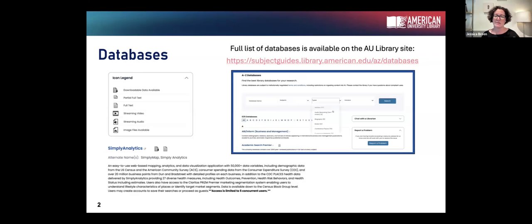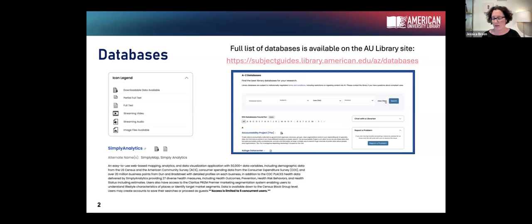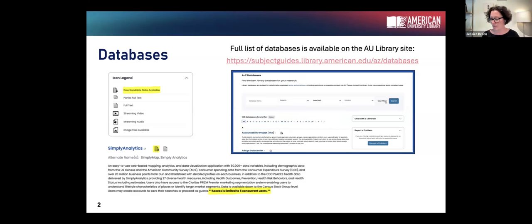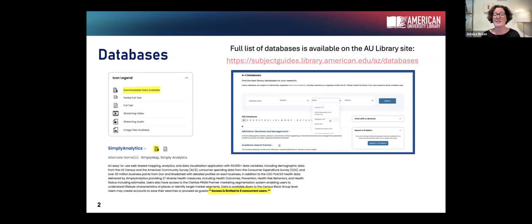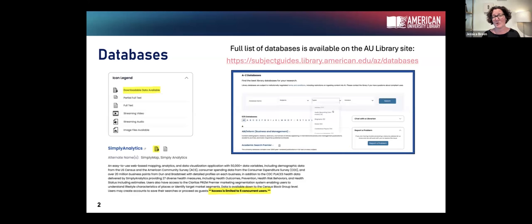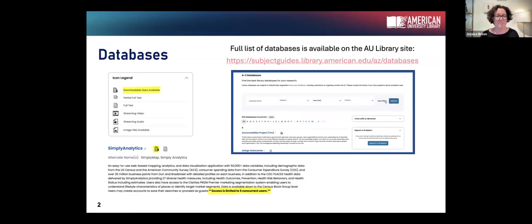You can search by subject as well. There's also an icon on our page that identifies downloadable data databases — ones with tabular data you can use in your classes. Simply Analytics is an example: it has downloadable data, mapping, and data visualization with largely U.S. Census and federal demographic data. However, it only has five concurrent users, so be aware of that limitation if you're planning to use it in class.